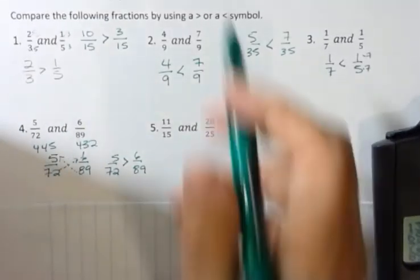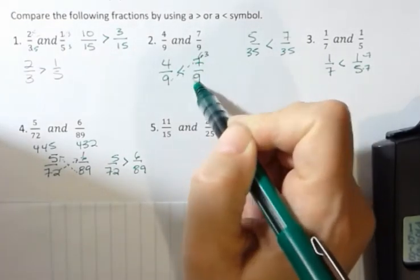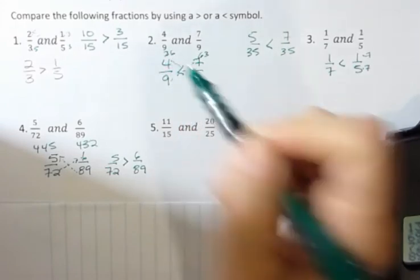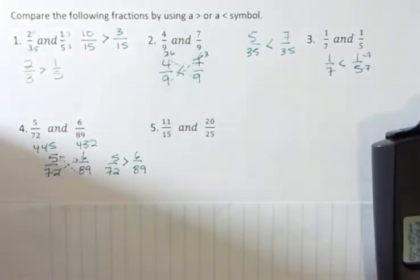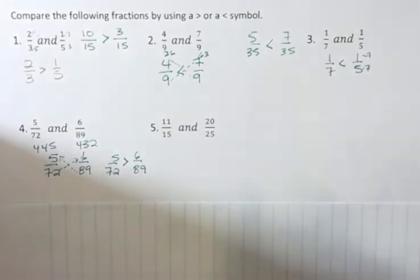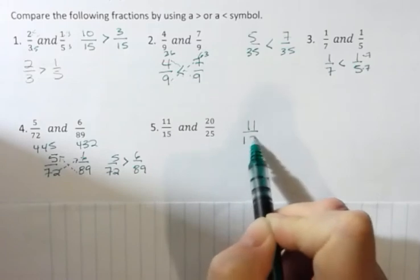Would it have worked up here when I had four ninths and seven ninths? Nine times seven is sixty-three, four times seven is thirty-six. It sure would have worked, because I can see that thirty-six is less than sixty-three. So it would have worked on those other ones as well. And maybe you want to try this one on your own, without my help, and then come back and see how you did.